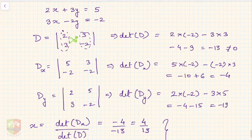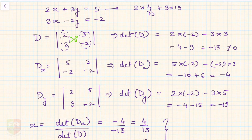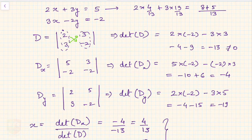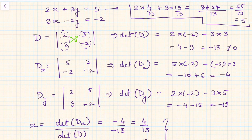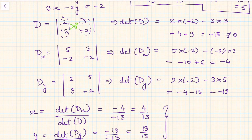Let us verify by substituting back into the first equation. 2×(4/13) + 3×(19/13) = 8/13 + 57/13 = 65/13 = 5. This confirms our solution x = 4/13 and y = 19/13 is correct. Cramer's Rule gave us the right answer.